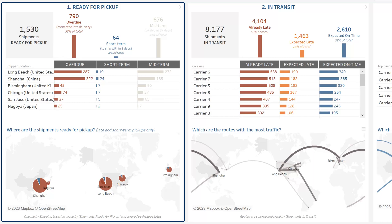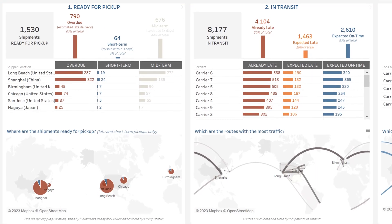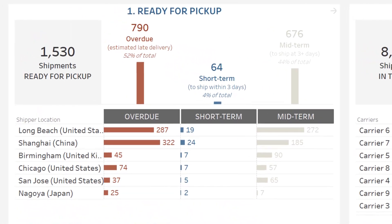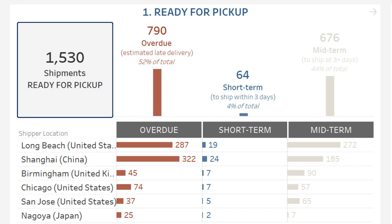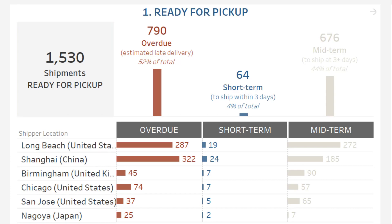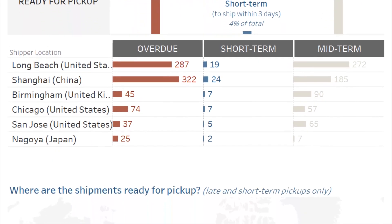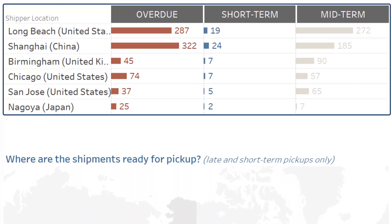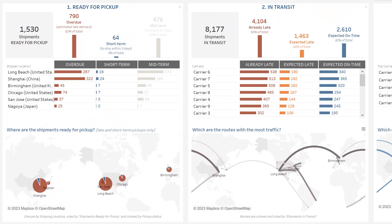Let's now focus on shipments that are ready for pickup. Based on the expected delivery date and the duration of past shipments, this accelerator calculates the pickup date that should not be missed to deliver your customers on time. How many shipments must be made in total? How many are already overdue? How many must be shipped in the short term or the mid term? Where are the shipping sites with the highest volume of activity and the expedition centers with the highest activity rate?